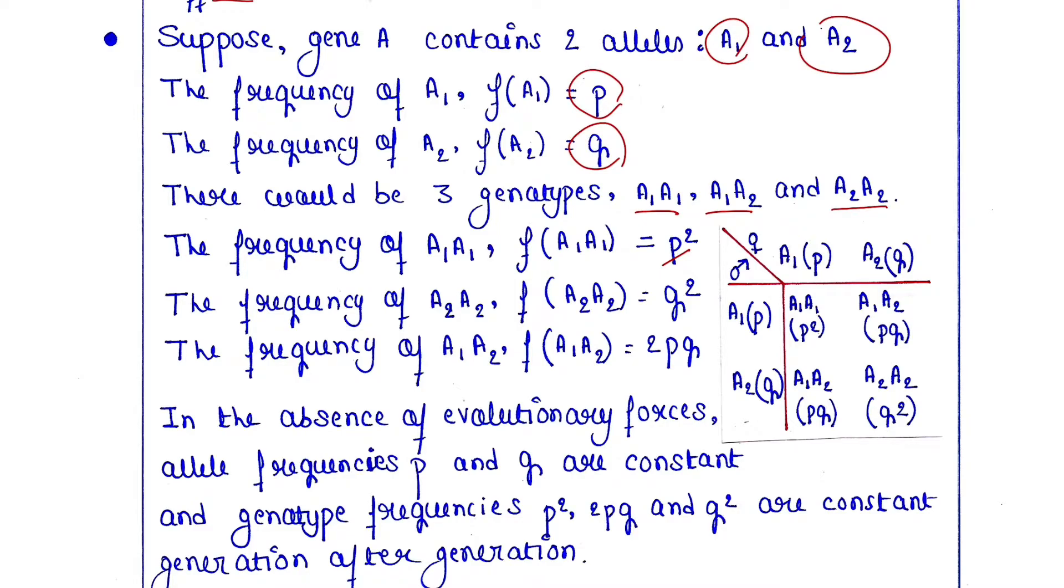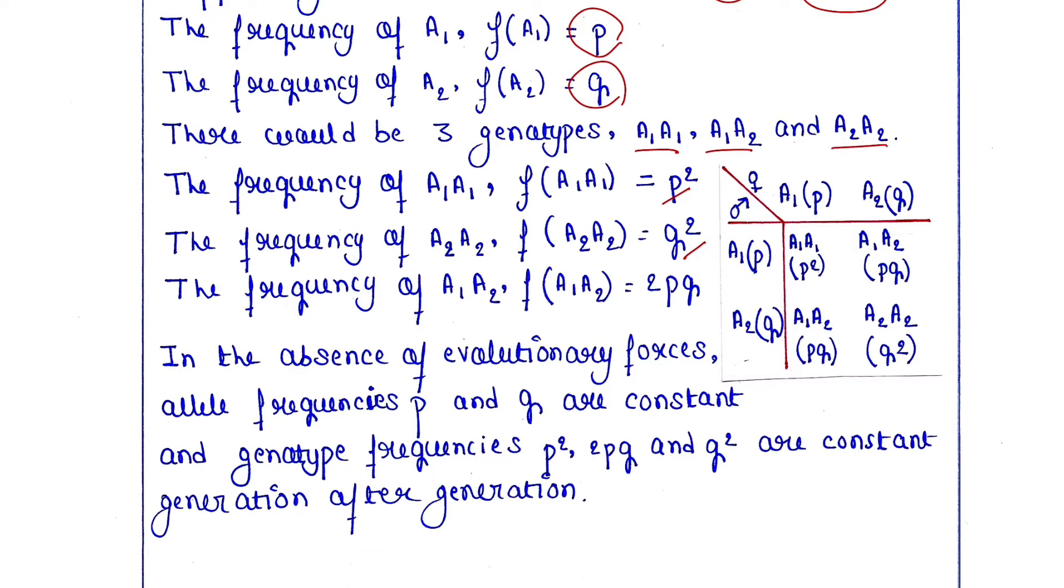The frequency of A₂A₂ is Q² because the frequency of A₂ is Q, so Q times Q equals Q². The frequency of A₁A₂ is 2PQ.